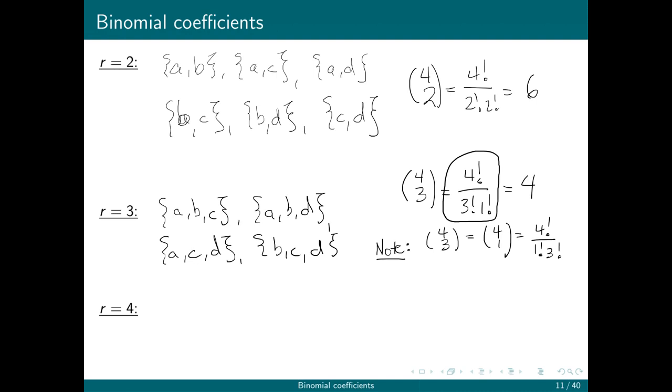Another way we can think about the relationship between 4 choose 3 and 4 choose 1 is that when I'm counting three-element subsets, I'm having to leave behind another element. So, for example, the set {a, b, c} has its complementary subset as the set containing the element {d}.